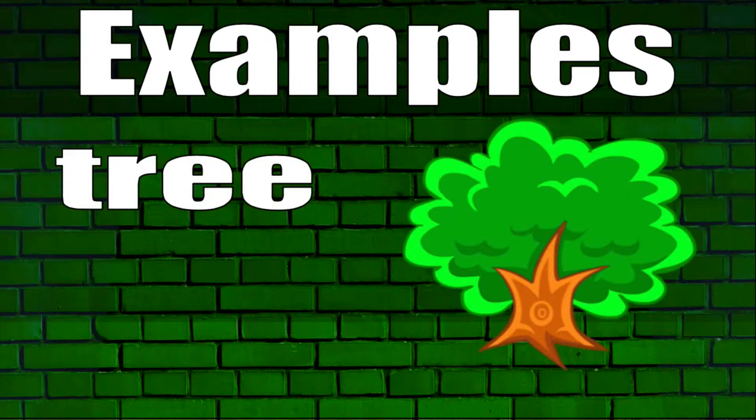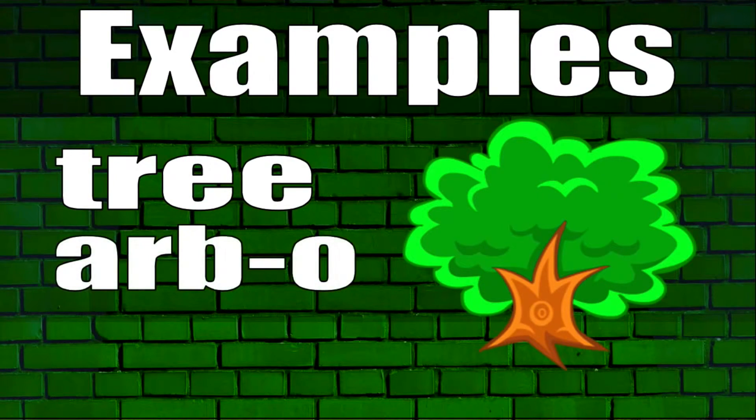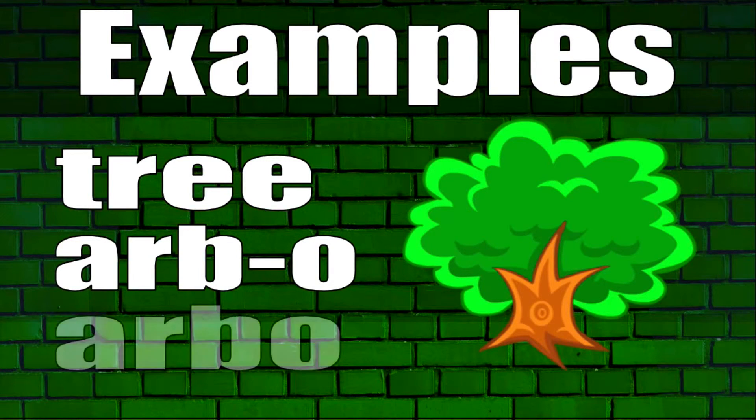One example is tree. In Esperanto, this uses the root word Arb plus the O ending, so a tree is Arbo.